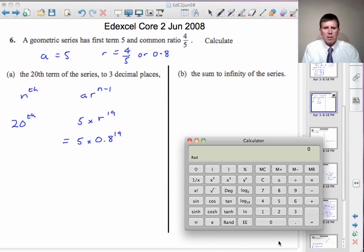Let's get the calculator. 0.8 raised to the power 19 equals, multiplied by 5, and it's 0.0721 to 4 decimal places, 0.072 to 3 decimal places.